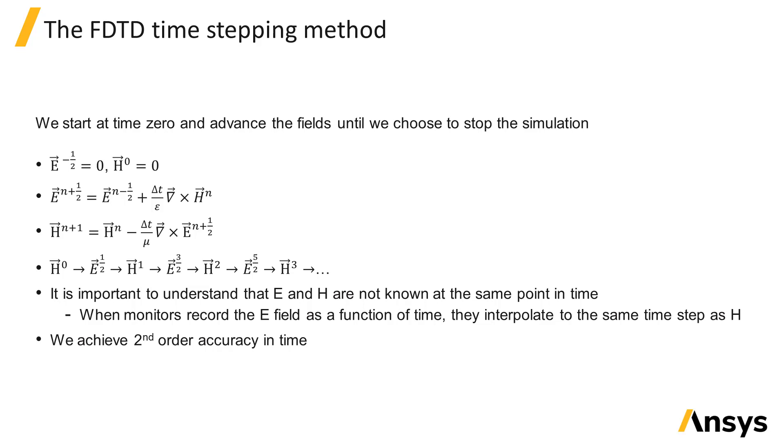Despite this issue, this leapfrog approach has the advantage of allowing us to obtain second order accuracy in time, which means that the error between the electromagnetic fields calculated by FDTD and the correct solution scales with the time step squared. This means, for example, that if we reduce the time step by a factor of 2, our error diminishes by a factor of 4.